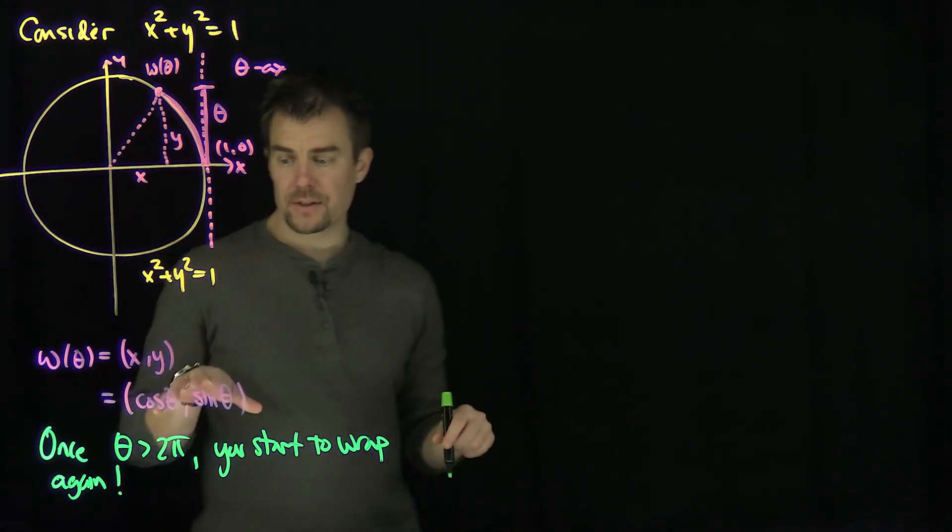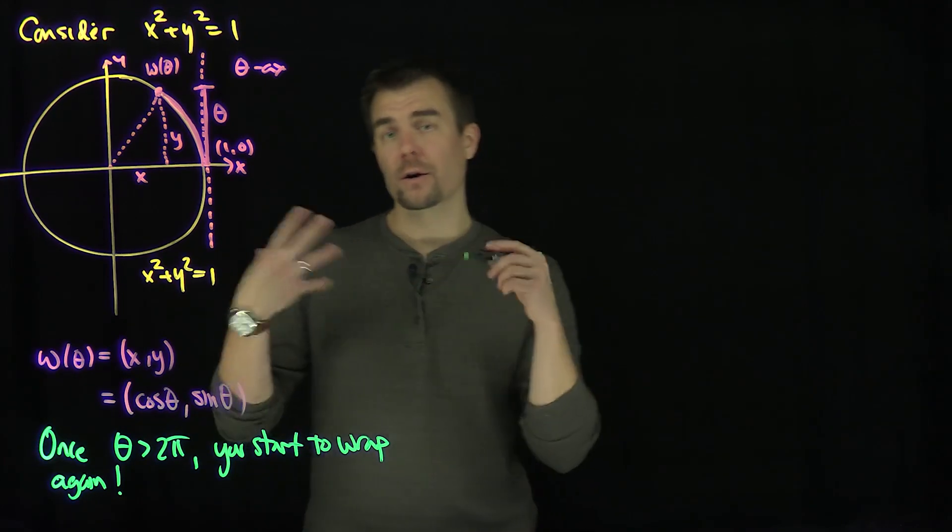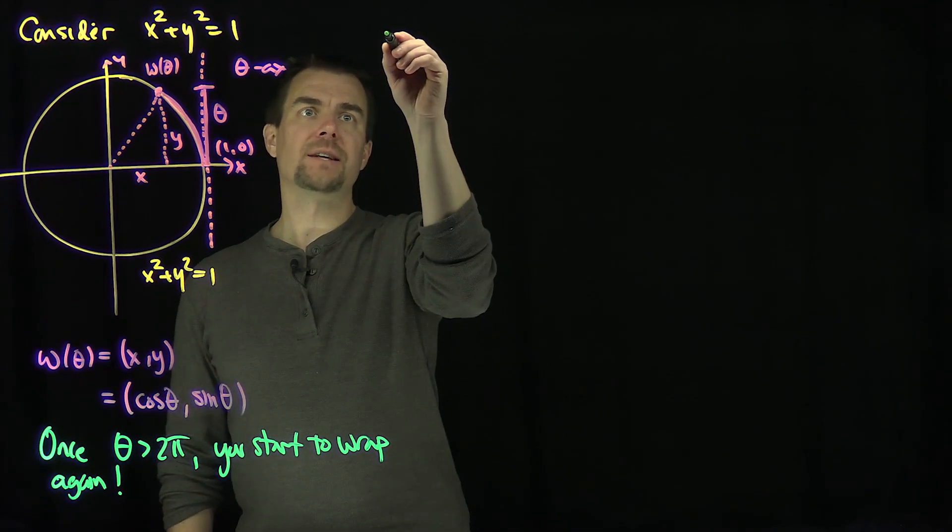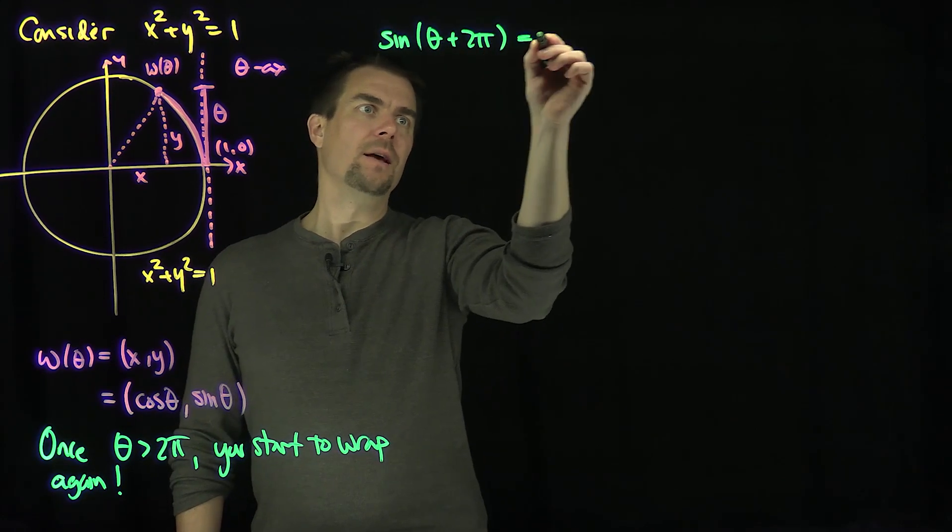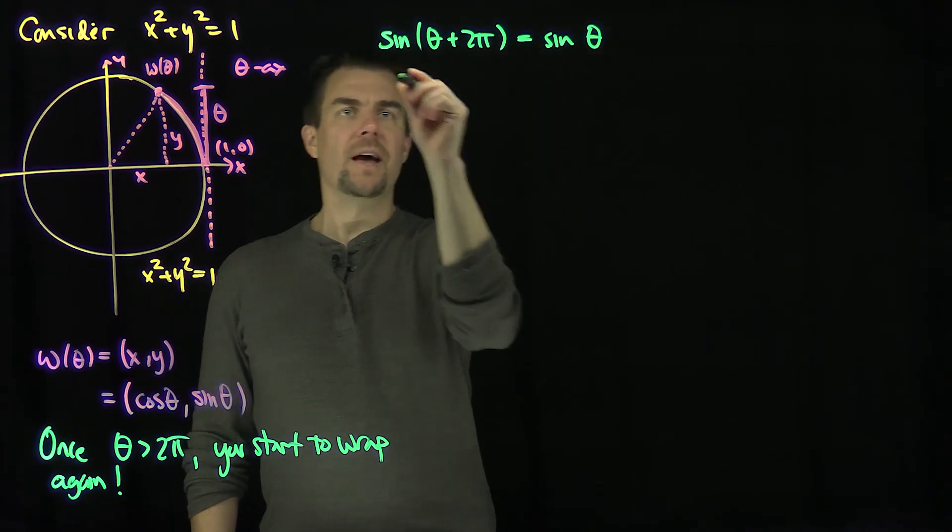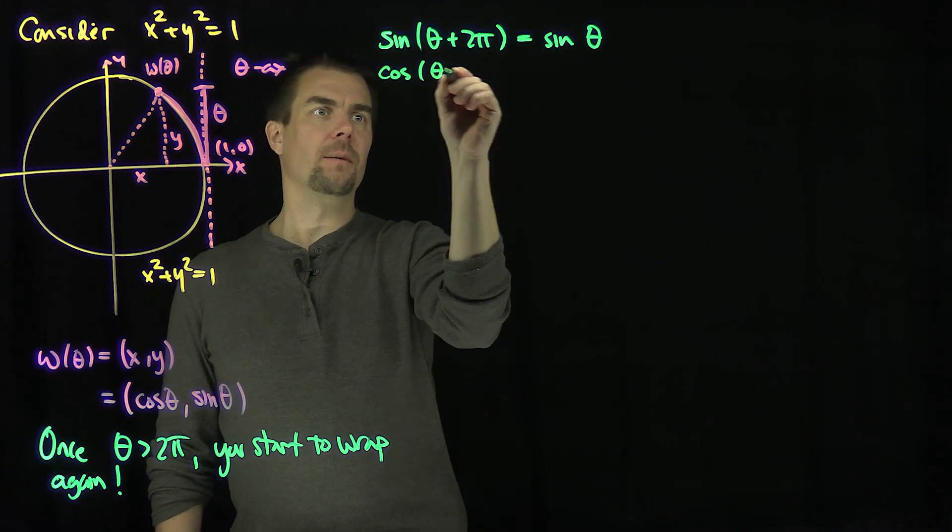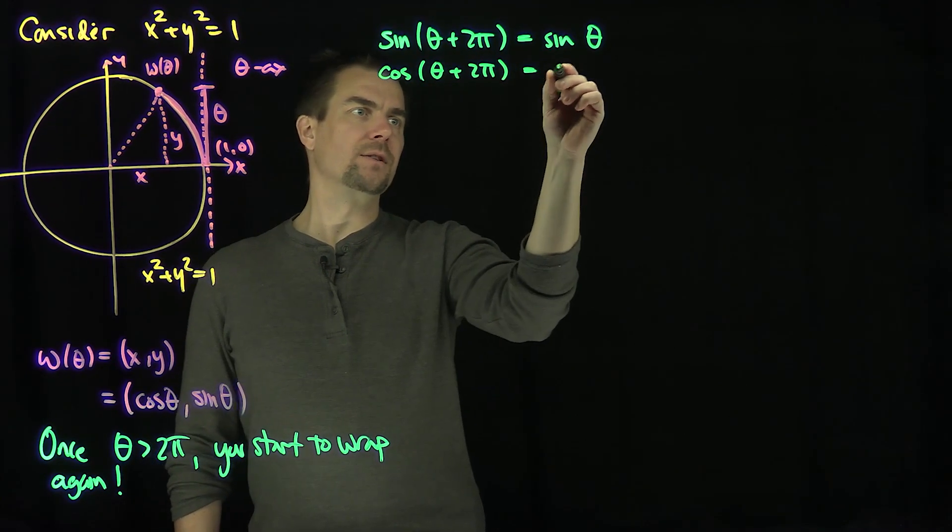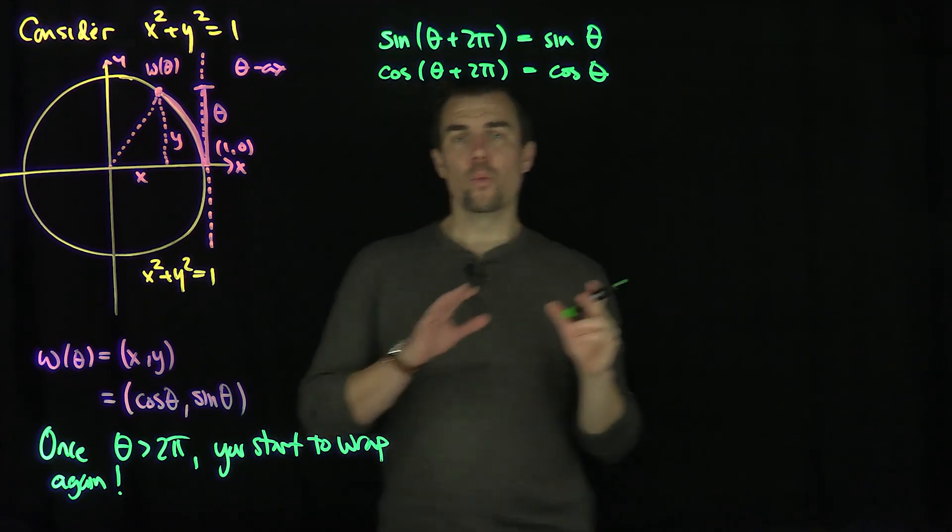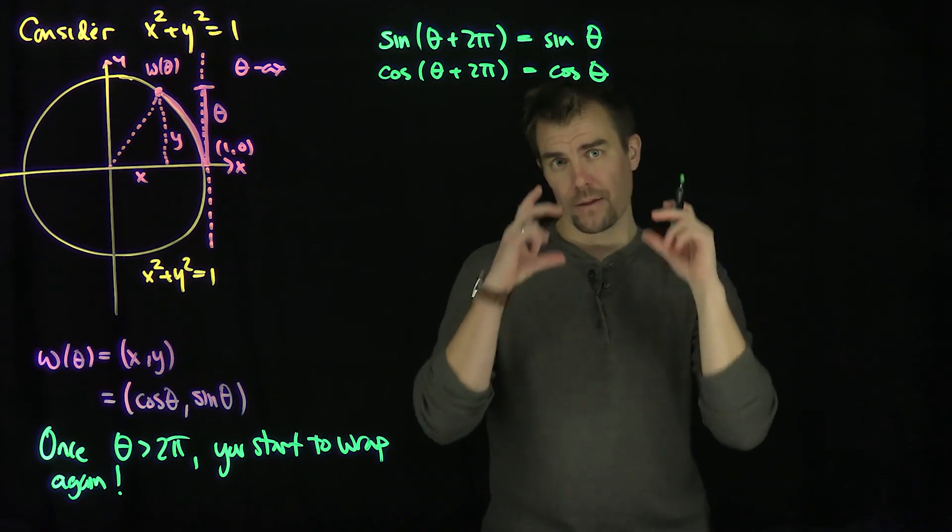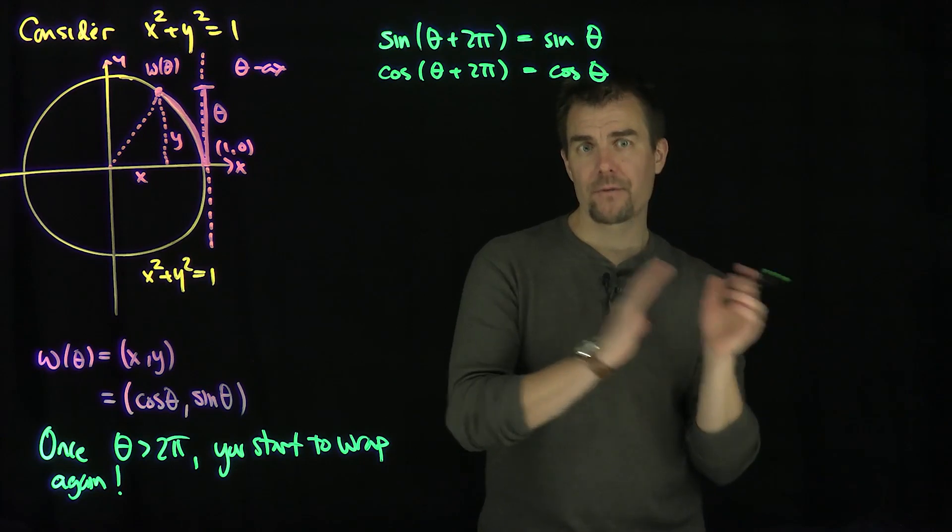And what that implies is that implies that these functions, sine of theta and cosine of theta are 2 pi periodic. In other words, that says that the sine of theta plus 2 pi is the sine of theta, and the cosine of theta plus 2 pi is the cosine of theta.